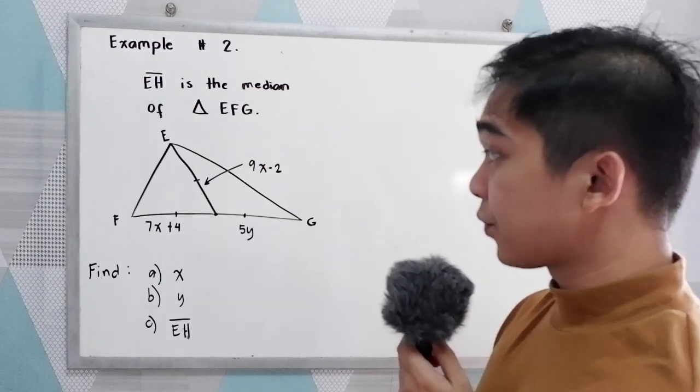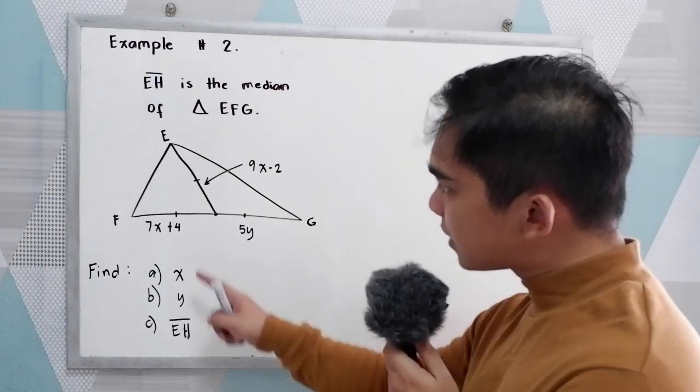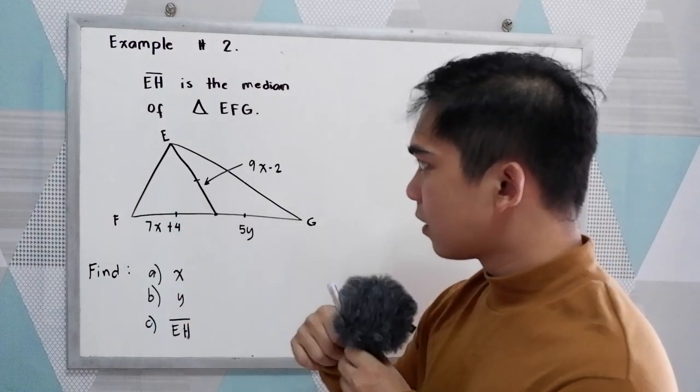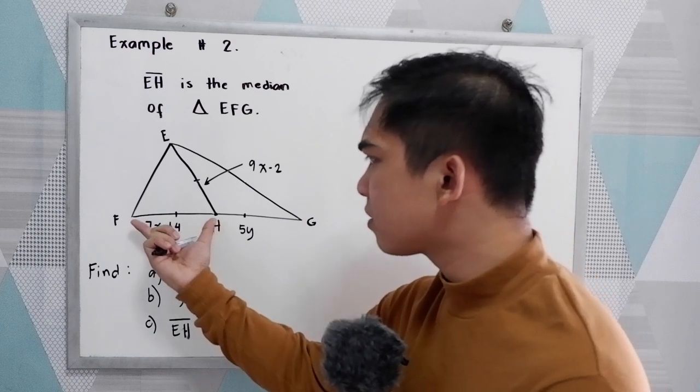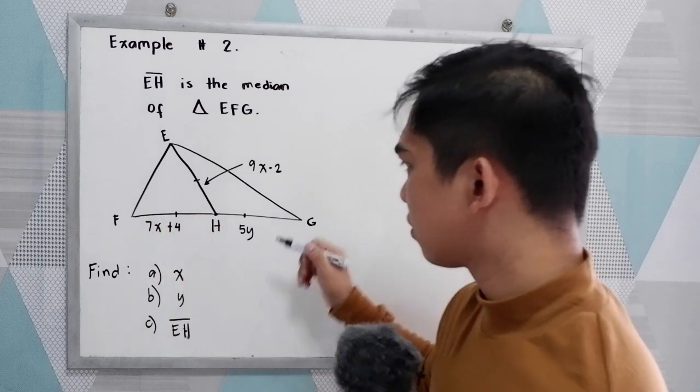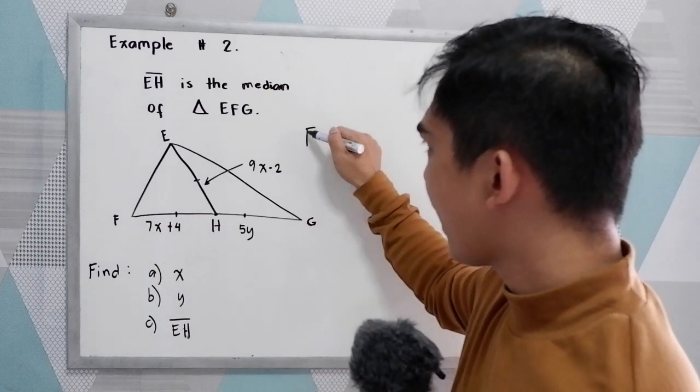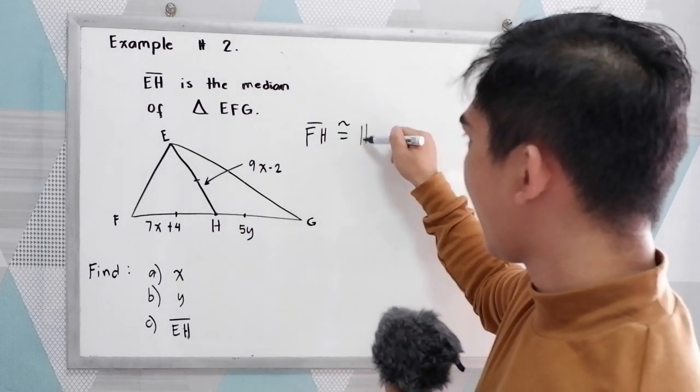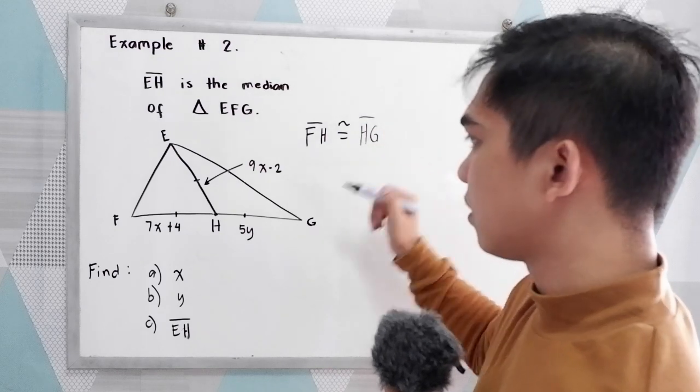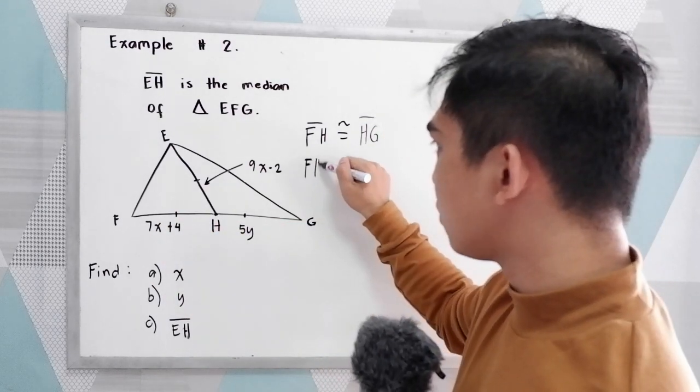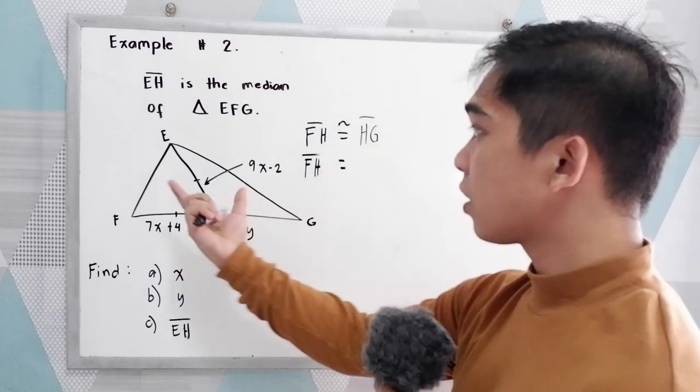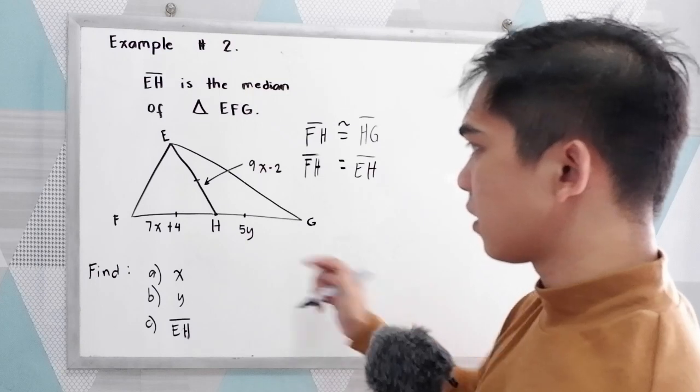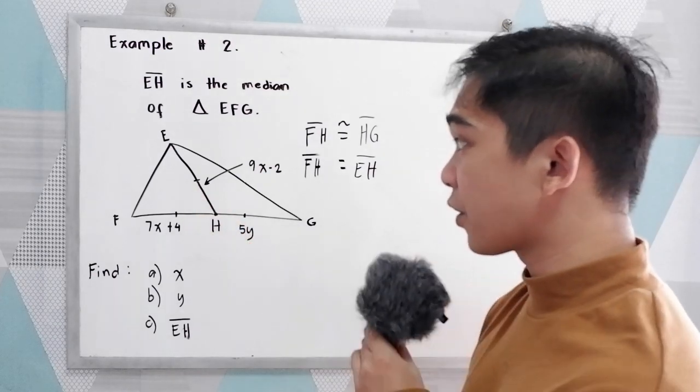Now we study our illustration. Notice that we have our markings. We have H here. That means we can say that FH is congruent to segment HG, and segment FH is also congruent to segment EH. The following sides are congruent.